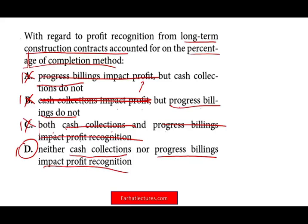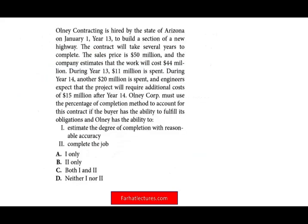This topic is covered in much more detail in my intermediate accounting. Check out my website with additional exercises. The next question: Only Contracting is hired by the state of Arizona on January 1st, year 13, to build a section of a new highway. The contract will take several years to complete. The sales price is $50 million, and the company estimates the work will cost $44 million — so we expect $6 million in profit over the life of the contract.